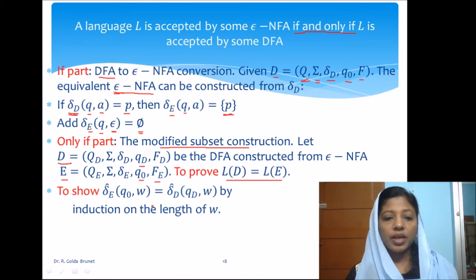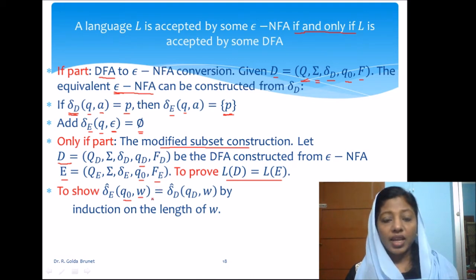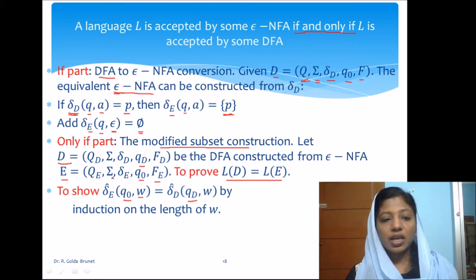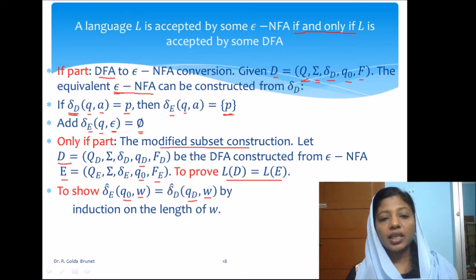We can establish this by showing that if we start from the starting state of the epsilon-NFA and accept an arbitrary string W, we end up in some state, and that state will be equivalent to the state we land in when we start from state Qd (the starting state of the DFA) and accept the same string W. That is, the extended transition function of the epsilon-NFA and the extended transition function of the DFA are one and the same. We prove this by induction on the length of W.